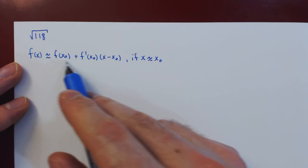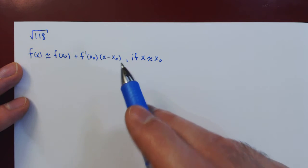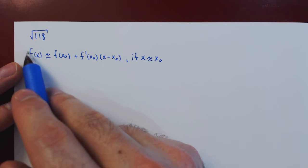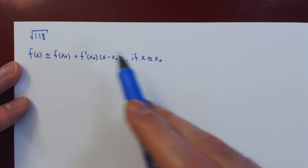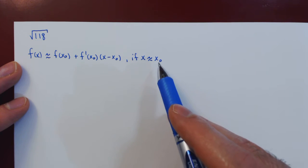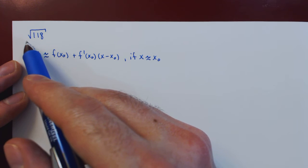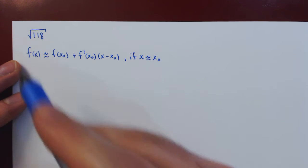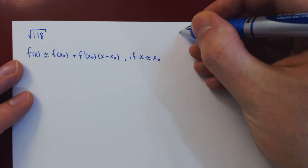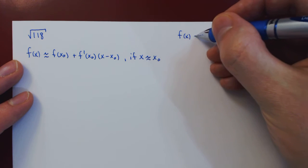So to use the method of linear approximation, we have to choose three ingredients: the function f(x), the value of x, and the value x₀, the point of tangency. Well, since we want to estimate the square root of a number, it's pretty obvious that the function f(x) should be the square root of x.